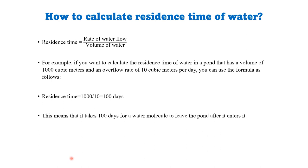The residence time of water can be calculated by dividing the volume of water by the rate of flow. For example, if a pond has a volume of 100 cubic meters and an overflow of 10 cubic meters per day, the residence time is 100 days — meaning it takes 100 days for a water molecule to leave the pond and enter it again.